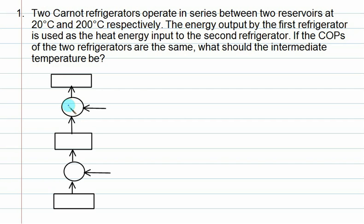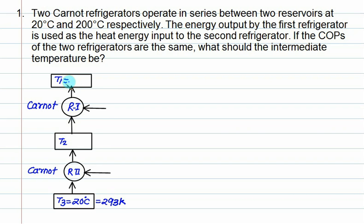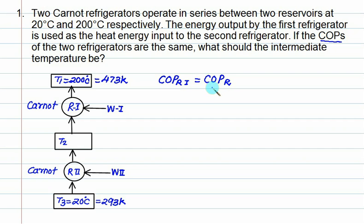Now consider two Carnot refrigerators in series. Call them refrigerator one and refrigerator two. The lowest temperature is 20 degrees Celsius (293 K) and the highest temperature is 200 degrees Celsius. Label the three temperature levels as T1, T2, and T3. Work inputs are W1 and W2. The condition given is that both have the same COP. The COP of refrigerator one is Q2 divided by W1, and the COP of refrigerator two is Q3 divided by W2.